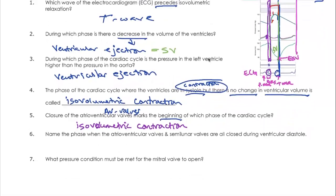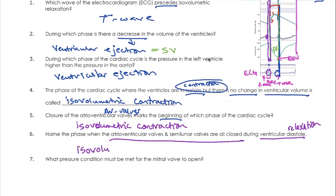Number six asks for the name of the phase when both the AV valves and semilunar valves are closed during ventricular diastole. Diastole is another name for relaxation. If all valves are closed, it's going to be an isovolumetric period because no volume is changing in the ventricles. Since it's during diastole, the answer is isovolumetric relaxation.